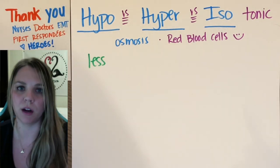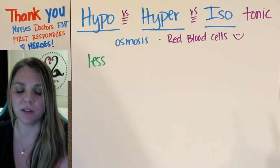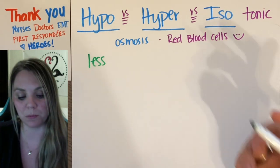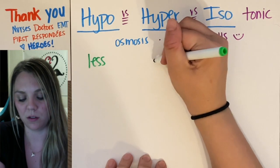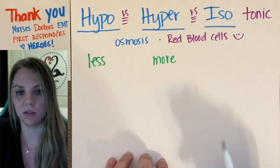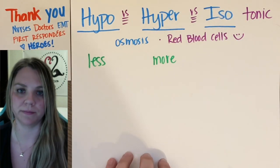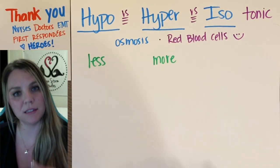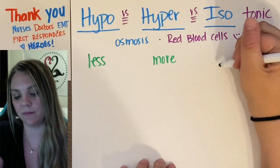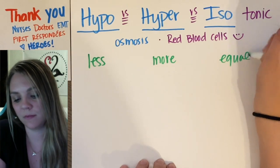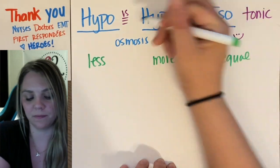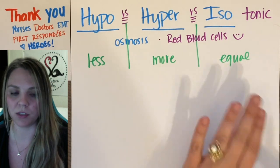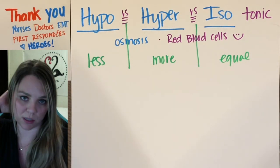Hyper — if you're hyper, you're on a sugar rush, you have high concentration, more. So a hypertonic solution has more concentration. And iso actually means equal, so we have less concentration, more concentration, and an equal concentration.